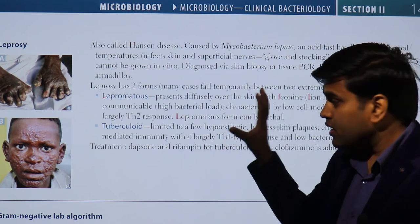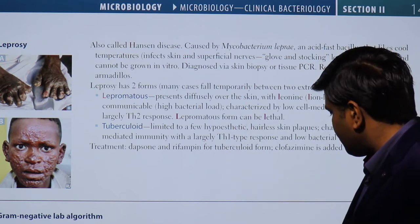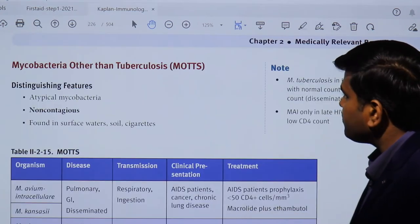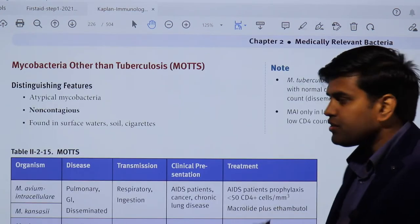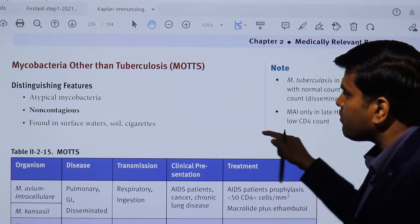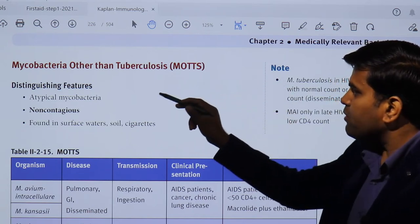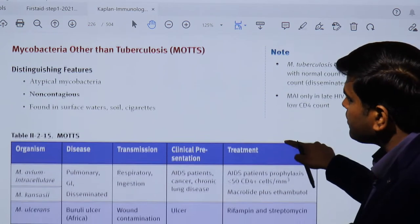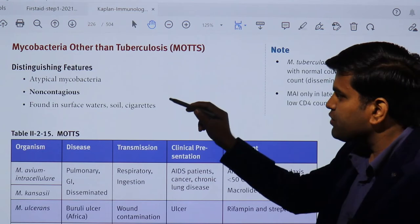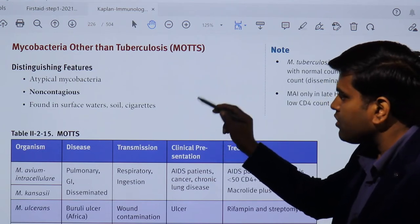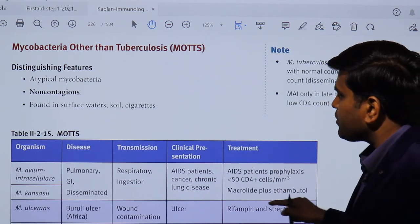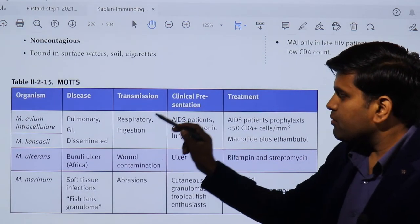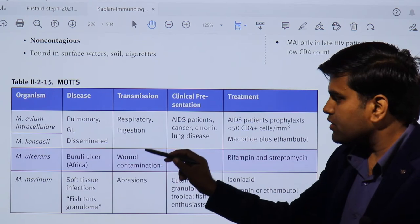Now moving to the Kaplan book: we have talked about Mycobacterium tuberculosis, and now we discuss mycobacteria other than tuberculosis, known as MOTT. MOTT are atypical mycobacteria — non-contagious, found in surface water, soil, and cigarettes. Common MOTT species include Mycobacterium avium-intracellulare, Mycobacterium kansasii, Mycobacterium ulcerans, and Mycobacterium marinum.